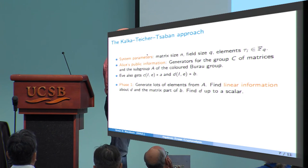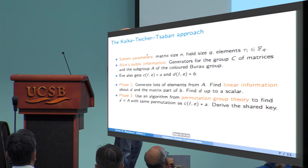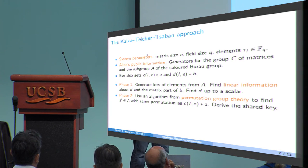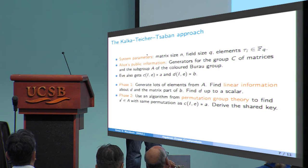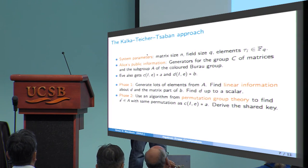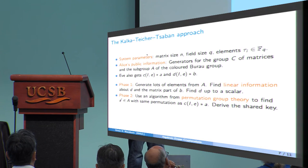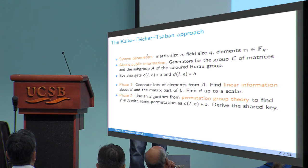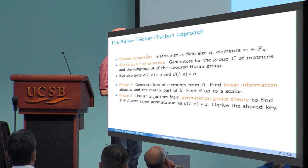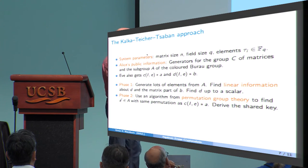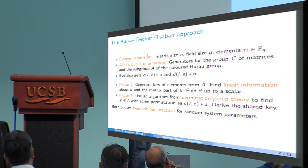And then phase two uses some clever algorithm from permutation group theory to find some equivalent element A' in this group A, with the same permutation as the pair that was transmitted from Alice to Bob. And these two pieces of information are enough to derive the shared key, it turns out. Now, both of these phases are heuristic, but they're practical for random system parameters.